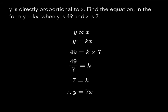Here's the answer. The first step is writing y is proportional to x, then y equals kx. We substitute in our values: 49 equals k times 7. So 49 divided by 7 equals k, meaning k equals 7. Therefore y equals 7x.